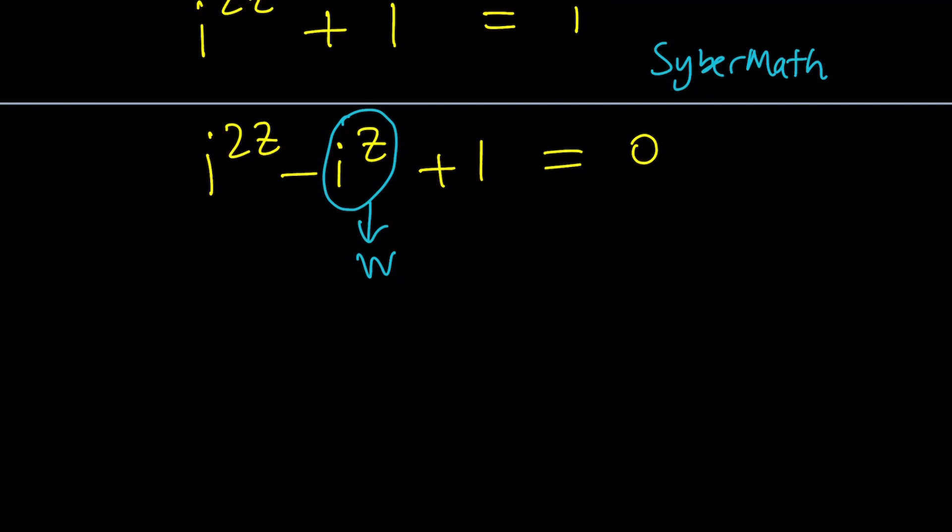So if this is W, then this becomes i to the z squared. One of the questions that we should always discuss is, is i to the 2z always i to the z squared? Or in other words, if you have something like a complex number u, u to the z to the w, is this always u to the zw? Or what are some of the conditions for which this is true? Because something that applies to real numbers does not always apply to complex numbers because it's a complex world out there.